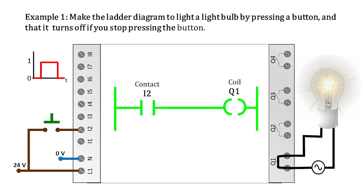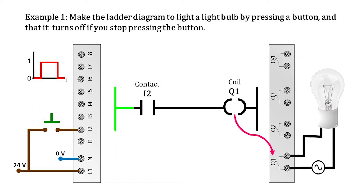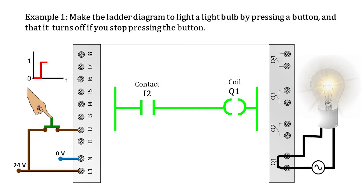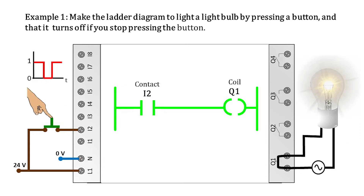If the button is released, it opens the circuit, sending a low voltage level to the PLC, which translates into a logical 0 that reaches contact I2, causing it to return to its default state — normally open. Then the horizontal line is de-energized, deactivating the Q1 coil. This coil immediately sends a signal to open the Q1 output, causing the bulb circuit to open and turn off. All this process is done instantly; we do not perceive the time it takes to turn on the light bulb when the button is pressed.